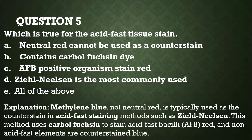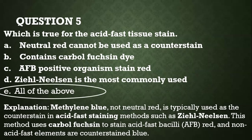Question number five: which is true for the acid-fast tissue stains? A — neutral red cannot be used as a counter-stain. B — it contains carbolfuchsin dye. C — AFB-positive organisms stain red. D — Ziehl-Neelsen is the most commonly used. The answer is all of the above, but note: you do not use neutral red as a counter-stain — you actually use methylene blue. When using acid-fast staining methods like Ziehl-Neelsen, the carbolfuchsin stains the AFB bacilli red, and the non-fat elements are counter-stained blue with methylene blue.